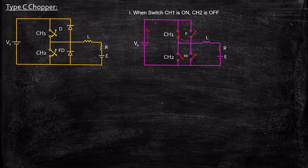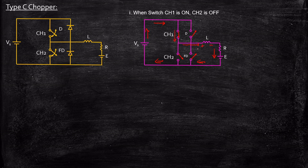The supply voltage available will flow through CH1 and then to the load. The inductor starts charging with a polarity plus and minus and the current returns through this path. The freewheeling diode is open circuited because positive is connected to its cathode. Diode D is also open circuited because the supply voltage is more positive, reversing biasing it.